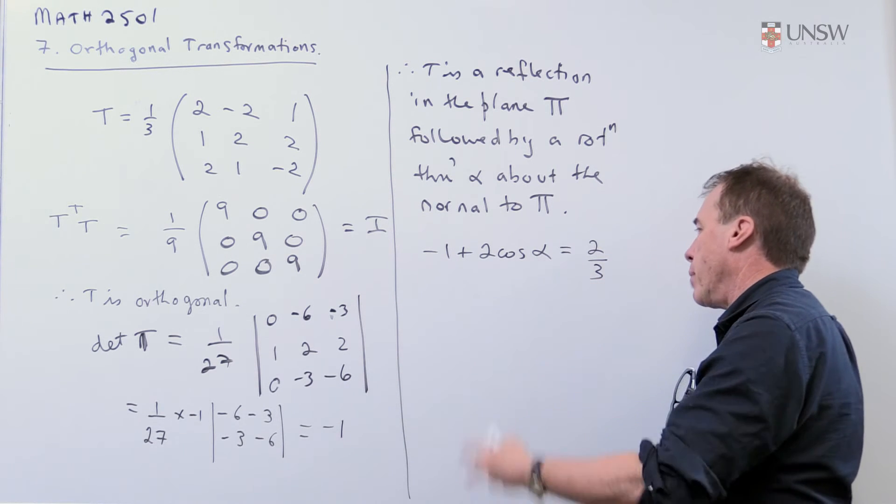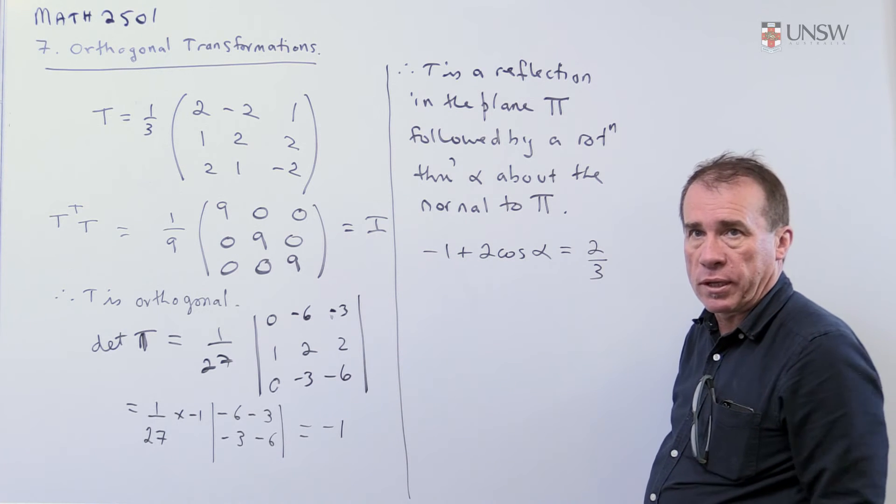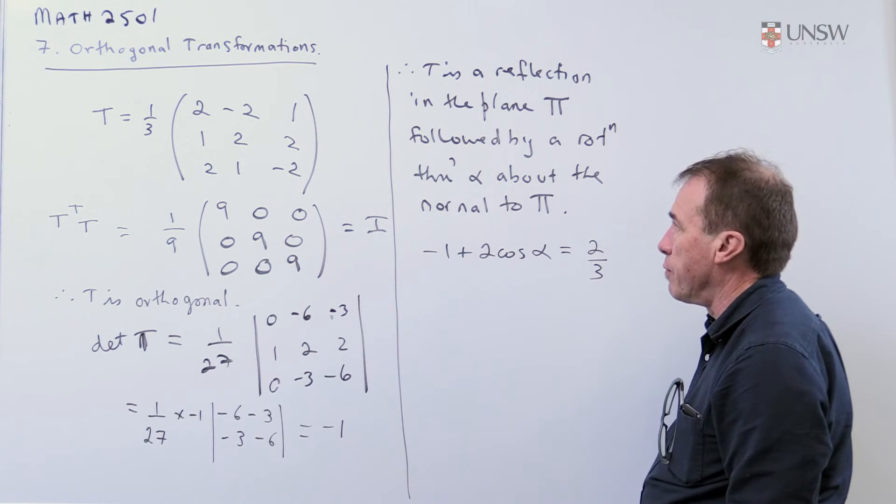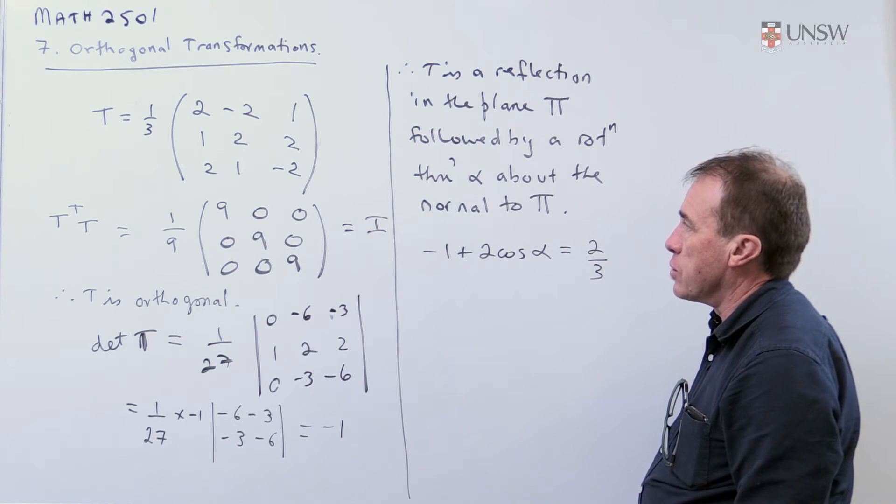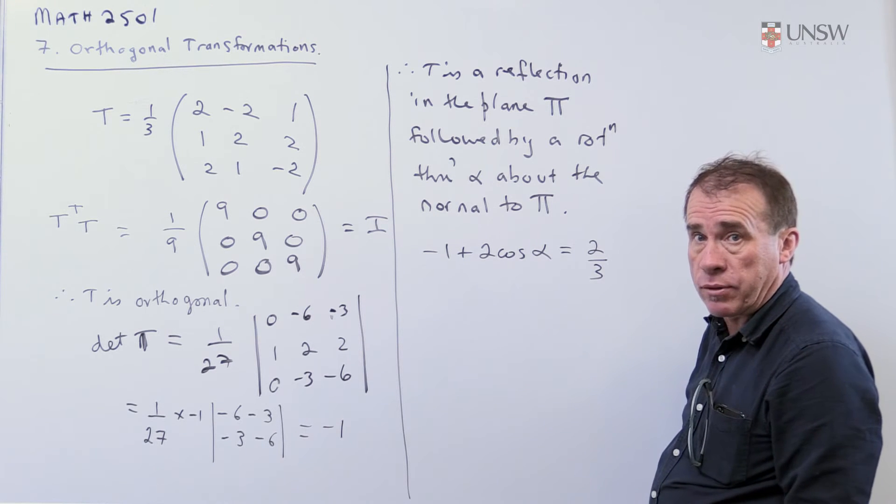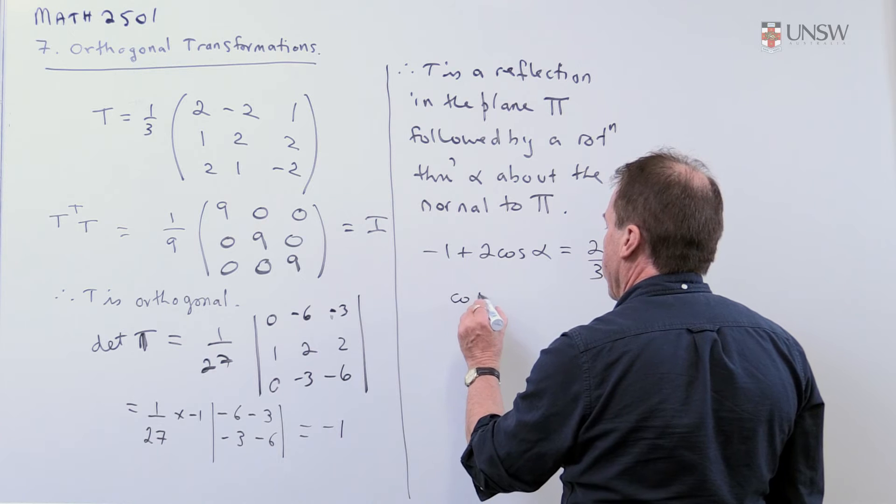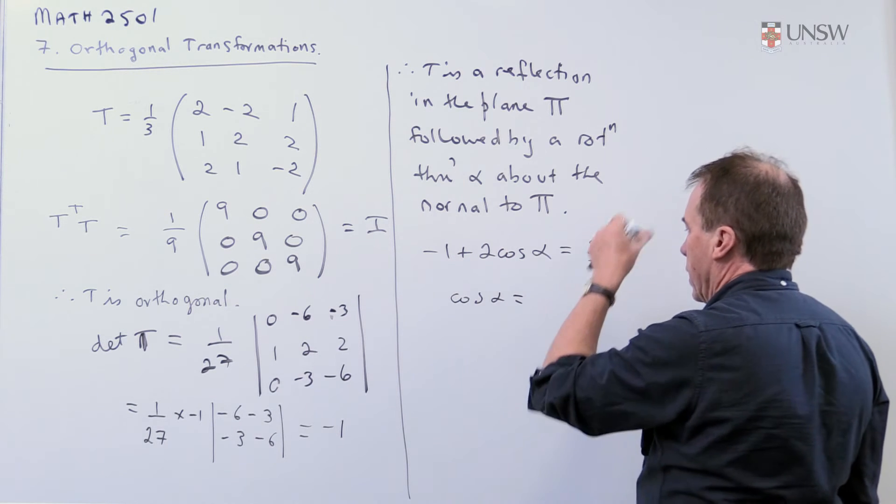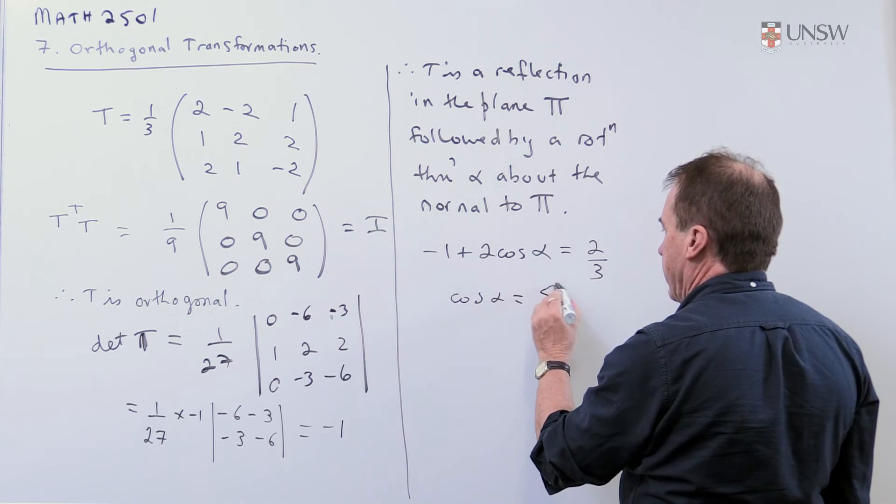So you either remember that or you just remember the formula. It's minus 1 plus 2 cos alpha is the trace of the original of the matrix you start with. So that says cos alpha then. So I take this on the other side and I get 5 over 6.